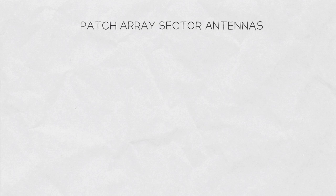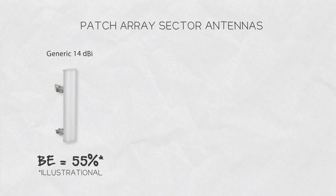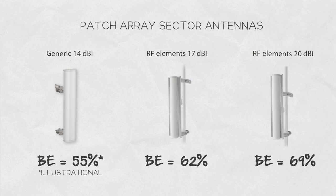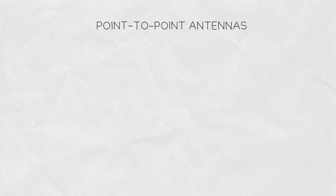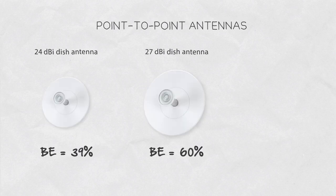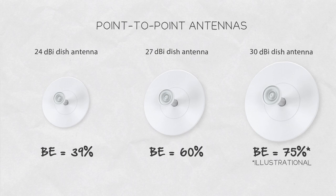Patch arrays commonly used for sectorial coverage have beam efficiency around 60% due to strong and frequency-dependent side lobes that collect interference. For point-to-point links, directional patch arrays and dishes have varying beam efficiency depending on the design and manufacture quality.